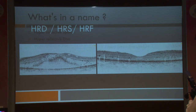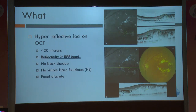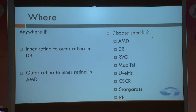Now we come to HRF — the hyperreflective spots, dots, hyperreflective foci — all these terms have been used interchangeably. It is a foci which is less than 30 microns. The reflectivity is more than the RPE band, and interestingly there is no back shadow caused by this, so there is no visible hard exudate in that location. It is focal and discrete. Is it disease specific? No — you can see a long list of retinal diseases in which we can see these HRF.